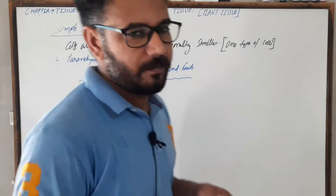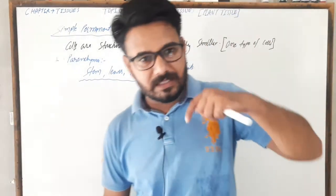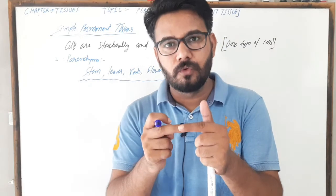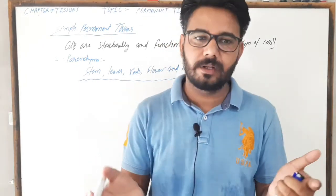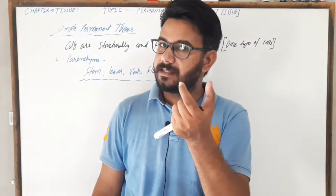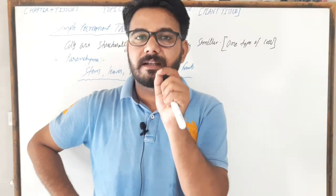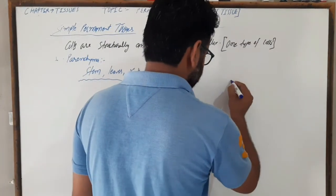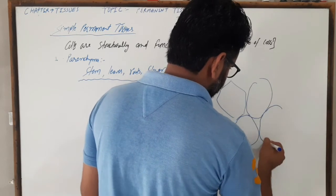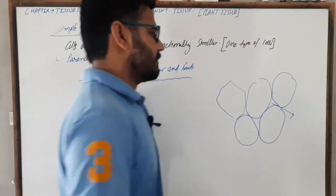If we talk about the structure of parenchyma: they have a very thin cell wall present. They are living unspecialized cells. They are loosely arranged, so there is a large space between cells. This space is called intercellular space. For example, in this simple permanent tissue, large spaces are present between cells — this is the intercellular space.